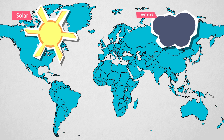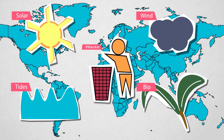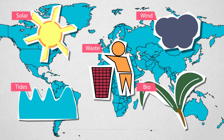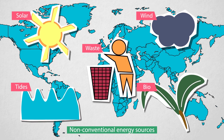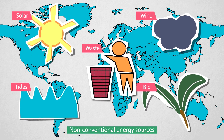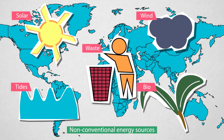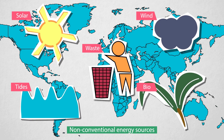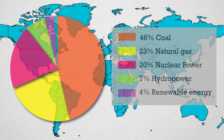For example, energy from the sun, wind, tides, biomass, and even from waste. These are commonly known as non-conventional sources of energy. These forms of energy are abundant and renewable. It is unlikely that we will run out of these sources. One more advantage is that these sources are pollution-free and eco-friendly.